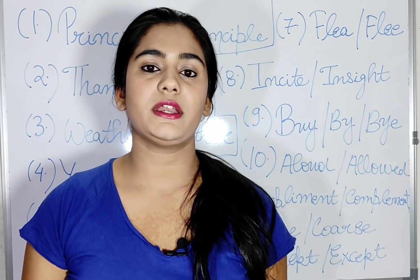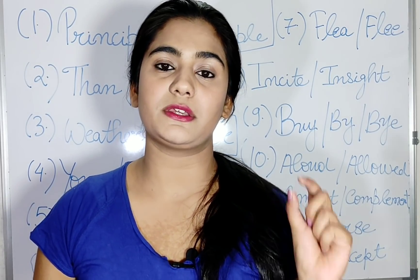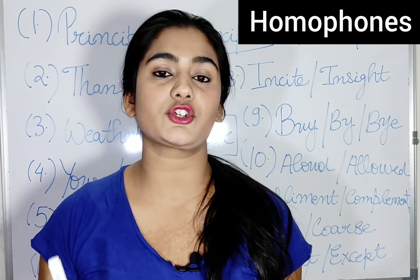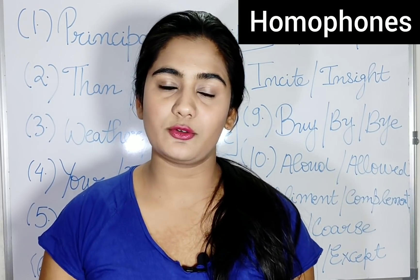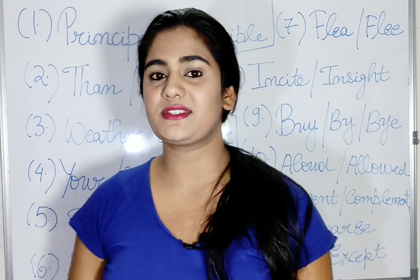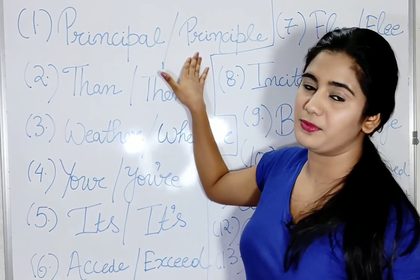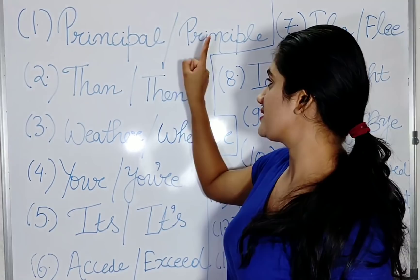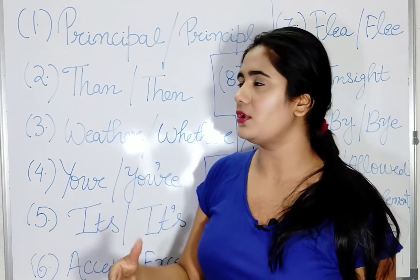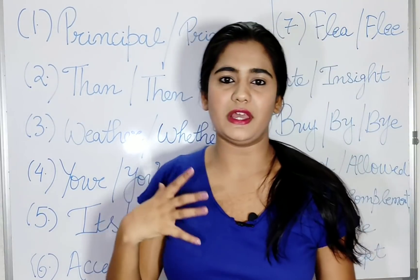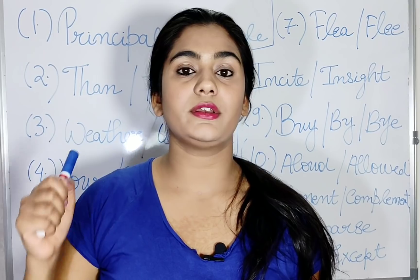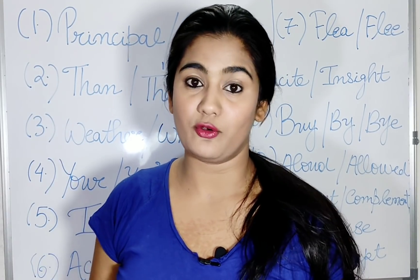Let's start with today's video. The topic I picked is called Homophones. Homophones means English words whose spelling are different, whose meaning are different, but the pronunciation is the same. For example, 'principal' and 'principle' are different — this principal means head of school, and this principle means any basic law or basic rule. That's what we call Homophones.